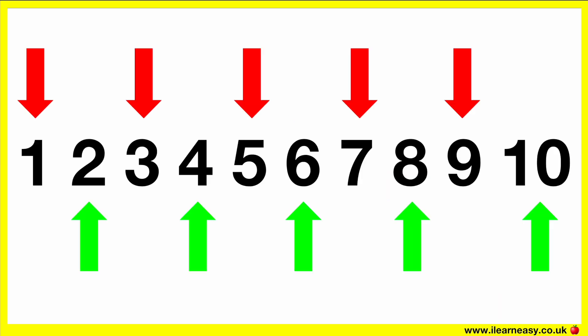So to recap, every number that ends in 2, 4, 6, 8 and 0 are even numbers. And every number that ends in 1, 3, 5, 7 and 9 are odd numbers.